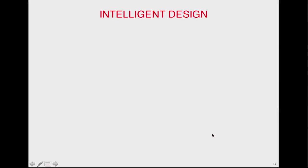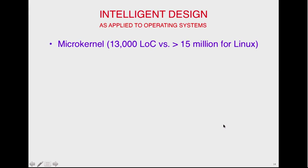A little bit about intelligent design — at least it doesn't apply to operating systems. Minix has a microkernel of about 13,000 lines of code. Linux has 15 million lines of code. Windows XP had 50 million lines of code, and Windows 7 is maybe 100 million lines of code. We've got 13,000 lines in the kernel.